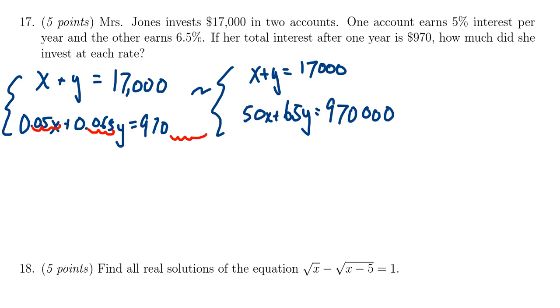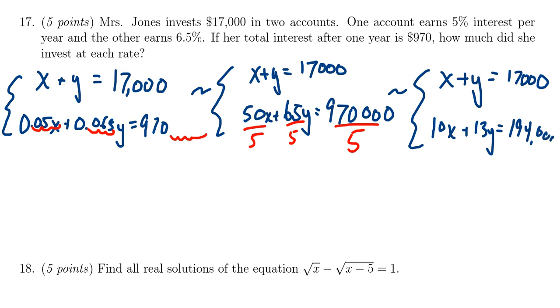After doing that, getting rid of the decimals, I noticed that everything's divisible by 5. I could divide 50 by 5, 65 by 5, and that's also divisible by 5. In which case, if we simplify the numbers, because that just makes for cleaner arithmetic later on, we didn't do anything to the first equation. 5 goes into 50 10 times, so we get 10X. 5 goes into 65 13 times, so we get 13Y. And 5 goes into 970,000, that happens 194,000 times. Feel free to use a calculator to help you in said calculations.